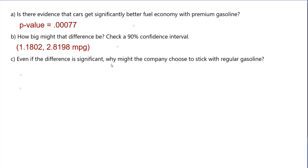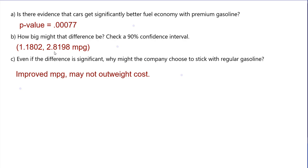Even if the difference is significant, why might the company choose to stick with regular gasoline? First is always cost — even though we have improved miles per gallon, it might not outweigh the cost. We might get 20% better fuel economy, but premium gas costs about 40 cents more per gallon. Since gas prices are what they are, that might be a 50% increase in cost with only a 20% increase in fuel economy. Also, cars aren't designed to run on premium, so you might have issues if you're only supposed to run 87 octane.